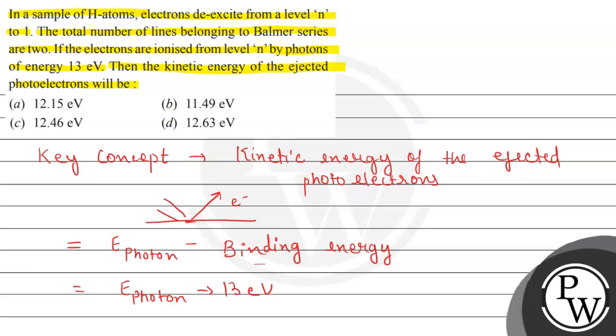According to the given options, our final answer will be option A, that is 12.15 electron volts. So let us mark option A as the correct answer. Options B, C, and D are incorrect. This was the whole solution. Hope you understood it well. Best of luck.